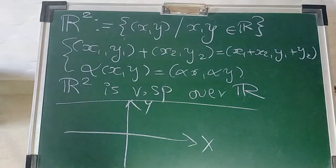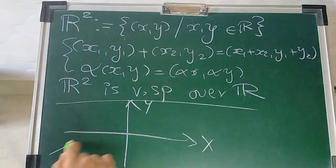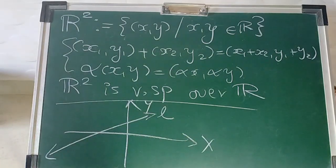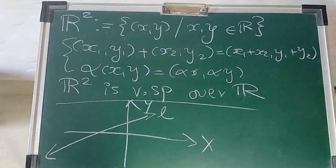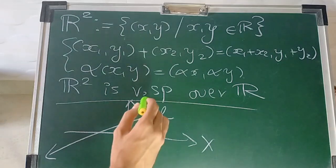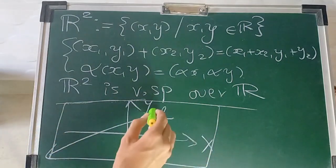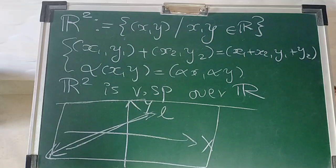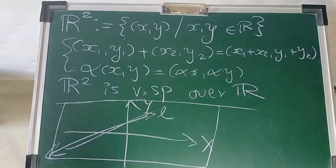We will be talking about the standard subspaces. Suppose I talk about straight lines — can a line L be a subspace of R²? If it is a subspace, it must satisfy all those 10 properties, because a subspace is nothing but a smaller vector space inside a bigger space.